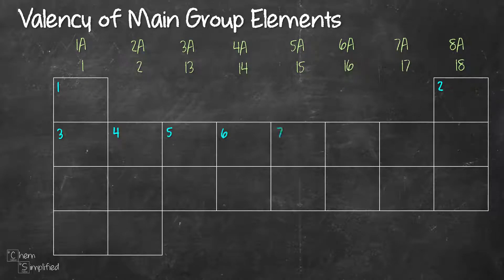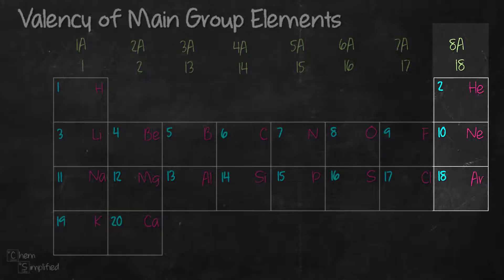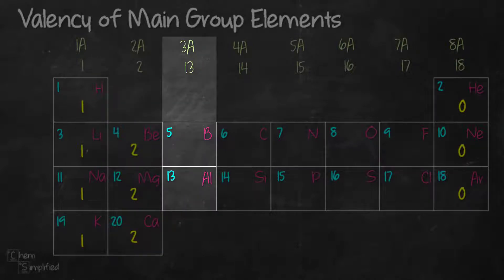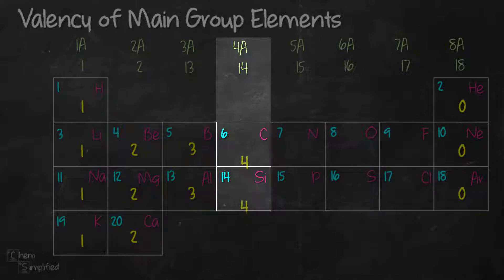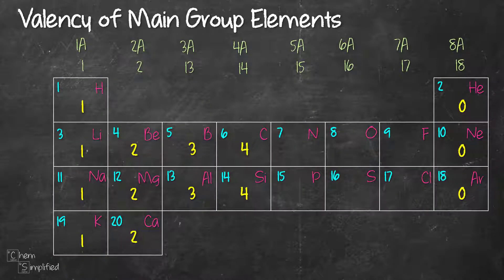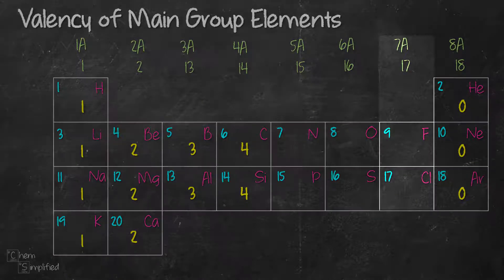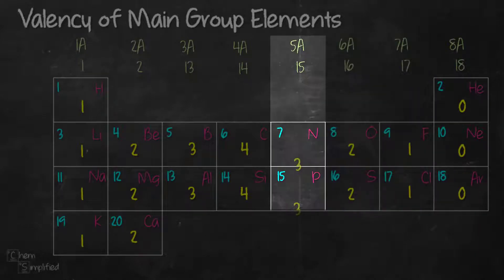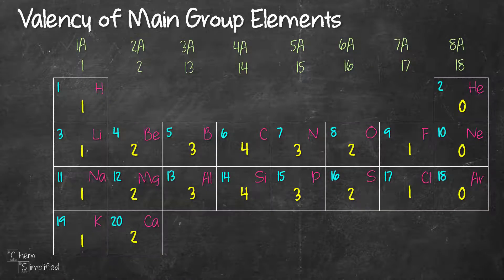There are the main group elements. Since noble gas elements are stable, their valency is going to be 0. Then we start from group 1, their valency is 1. Group 2 will be 2. Group 3 will be 3. And group 4 elements will have a valency of 4. And then we go backwards starting from the halogens which are group 7 — the valency will be 1, then 2, then 3. This is the valency for the first 20 elements, which is pretty straightforward.